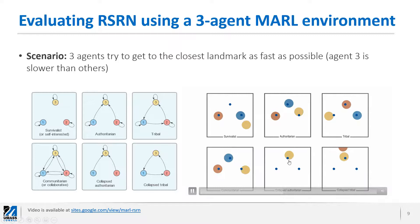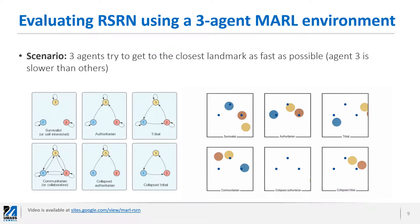In a collapsed authoritarian network, which is an extreme version of the authoritarian network, both agent blue and red try to finally put agent red into the closest landmark.